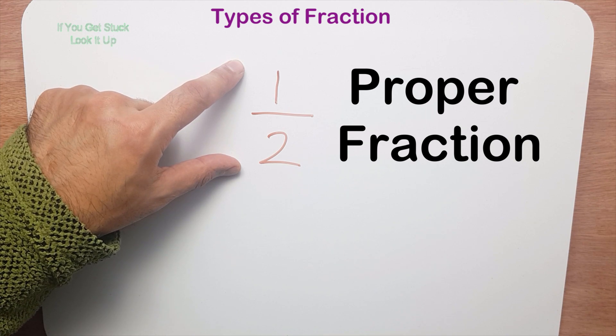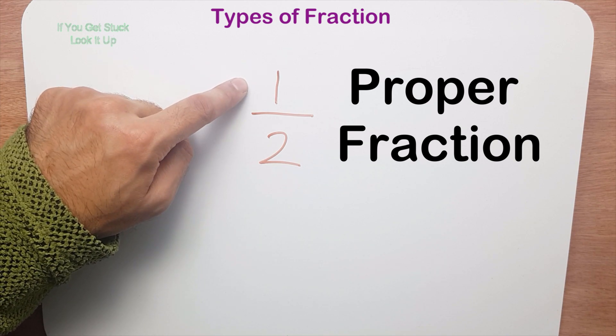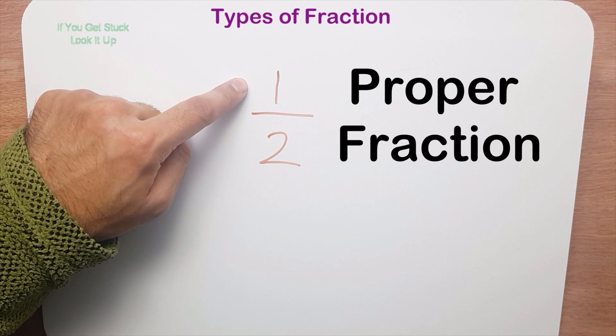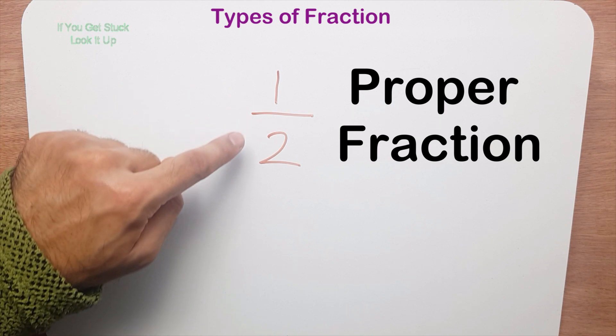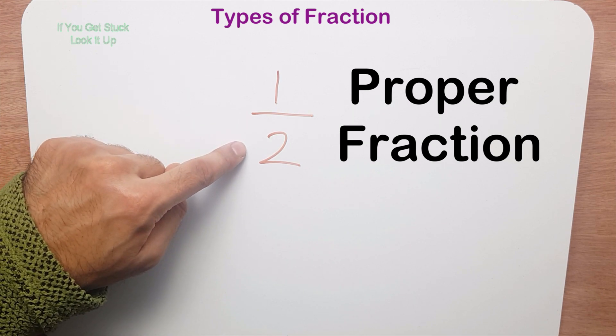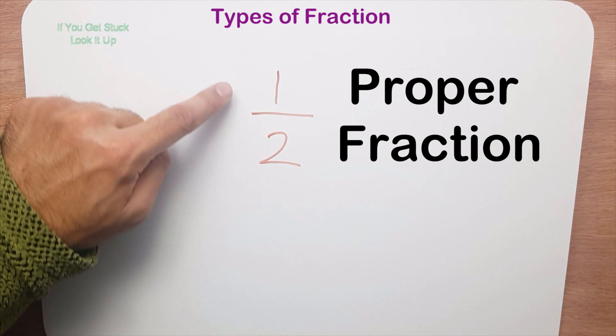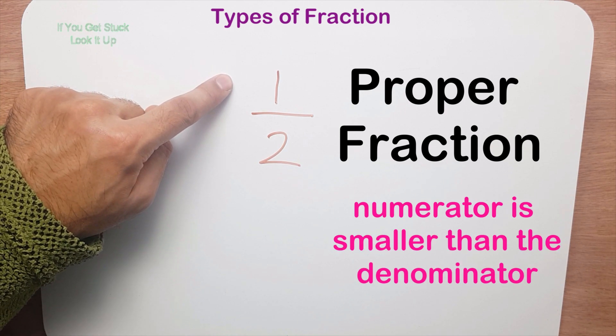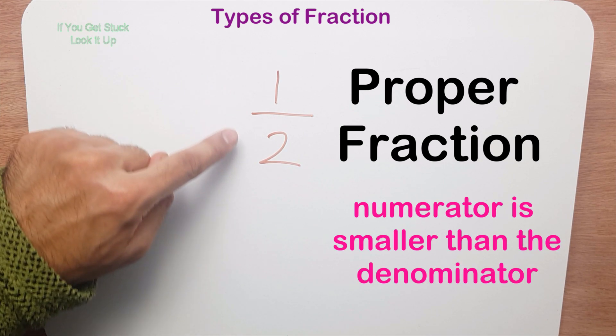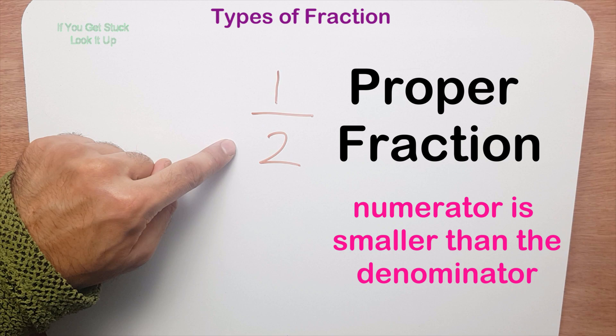This here is called a proper fraction. Why is it called a proper fraction? Because the top part is smaller than the bottom part — the numerator is smaller than the denominator.